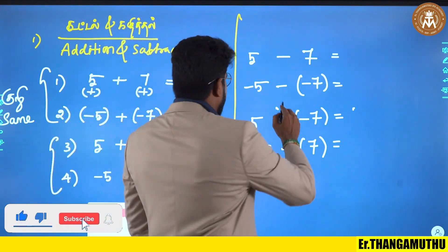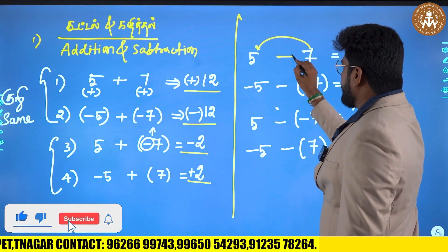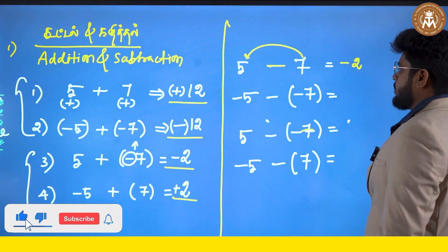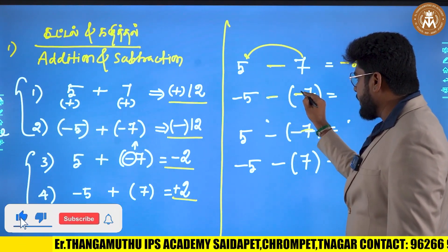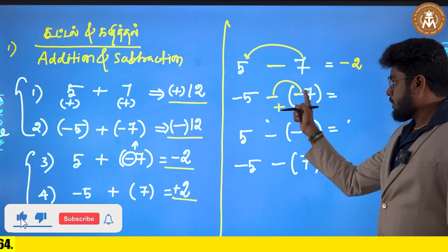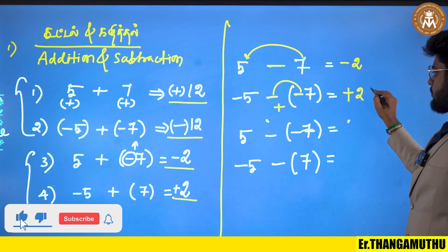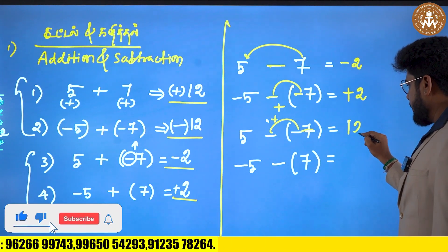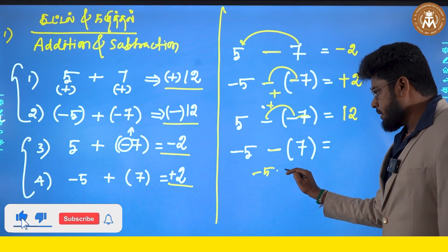5 minus 7 — we take the larger number minus 7. So the answer is minus 2. If you have minus 8 minus 8, it is equal to minus 2 — it is minus. Like this, it is minus 5 and minus 8. The larger number gives the sign of minus. 2 minus signs make a plus — so plus 8 is minus 8. The answer is plus 2. 1 plus and 1 minus is plus, then plus and minus is minus.